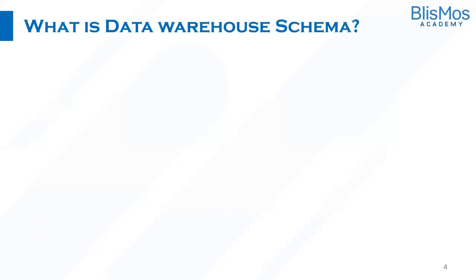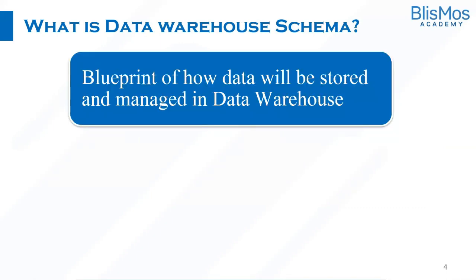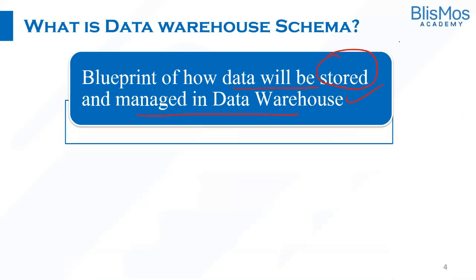Then what is schema in a data warehouse? It is just an extension of that. A data warehouse schema is a blueprint of how data will be stored and managed in a data warehouse — how we are storing the data, how we are managing it. It is the organization of how data is stored and how it relates to other data within a data warehouse.